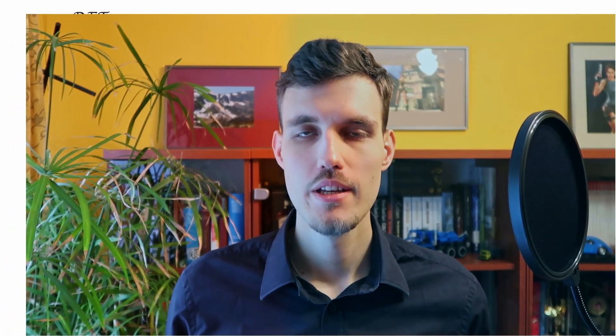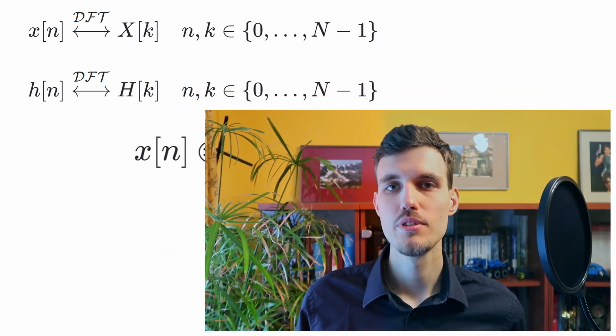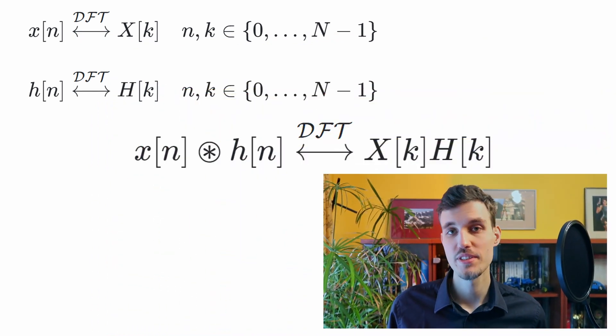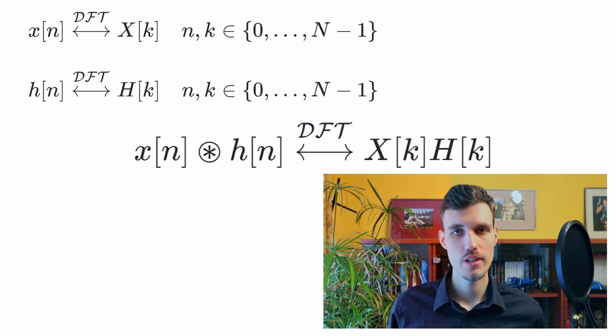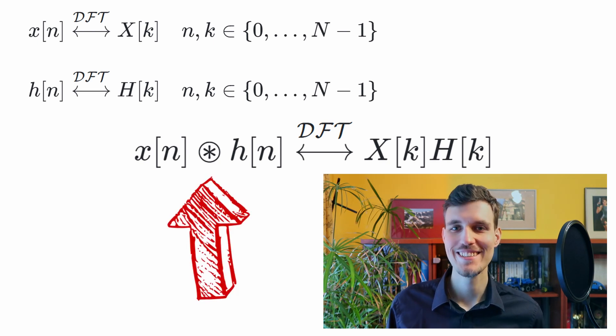In one of the previous videos we talked about the convolution property of the Fourier, Laplace and Z transforms. Does there exist a similar property of the discrete Fourier transform? It turns out that there is. A multiplication of two discrete Fourier transforms of discrete signals is equivalent to their circular convolution in the time domain.